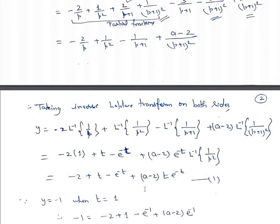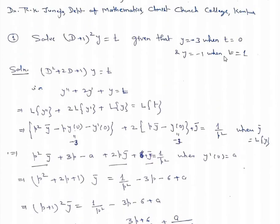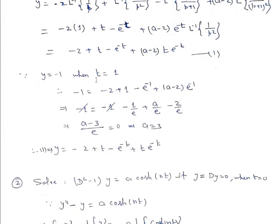Now to find the value of 'a', we make use of the second condition: when t = 1, y = -1. Substituting: -1 = -2 + 1 - e^(-1) + (a-2)·e^(-1). The -1 terms cancel, giving (a-3)/e = 0, so a = 3. Substituting a = 3, the solution is y = -2 + t - e^(-t) + t·e^(-t).